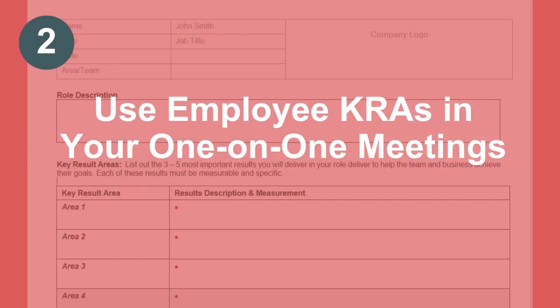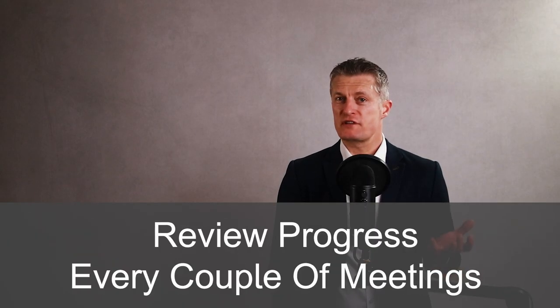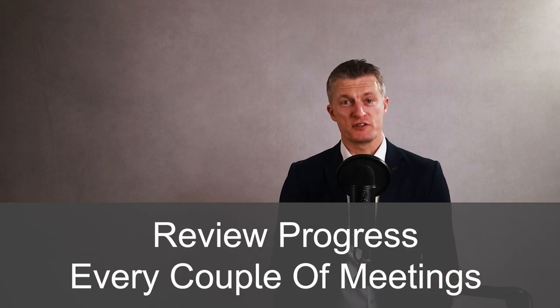Secondly, use the one-page individual KRAs summary in your one-on-one meetings. Review progress every couple of meetings with your team member — the constant reminders and your focus on KRAs will keep them front of mind with each of your team members.